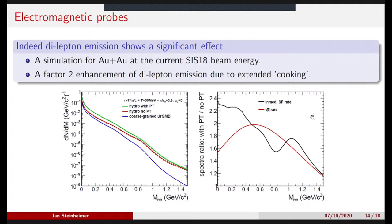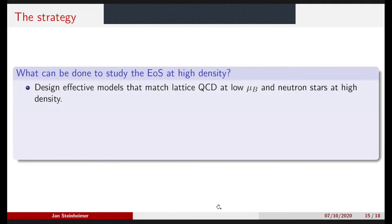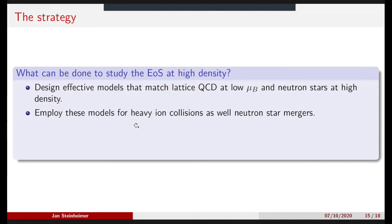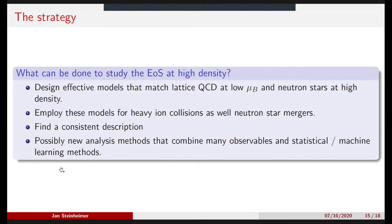So how can we go further? The idea is we have to design effective models that match lattice QCD at low chemical potential and neutron star properties at high density, employ these models for heavy-ion collisions as well as neutron star mergers to find a consistent description of both, and possibly use new analysis methods that combine many observables and statistical machine learning methods to confirm that whatever model we developed describes all these different types of data. That's probably the only way we can hope to achieve any clarity on the phase diagram.